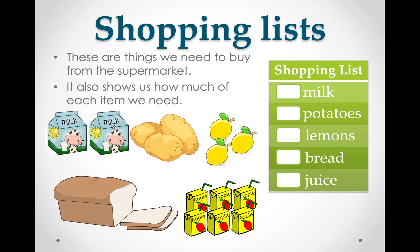So it looks like we need milk — we need 2. How many potatoes? We need 3 potatoes. Lemons — we need 3 lemons. One loaf of bread. And let's count the juices: 1, 2, 3, 4, 5, 6 — we need 6 boxes of juice. Now our shopping list is done.